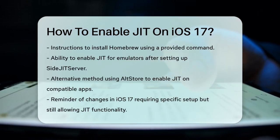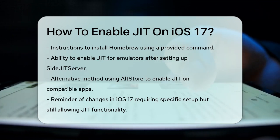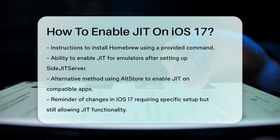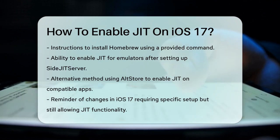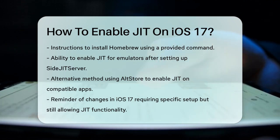If you're using AltStore, the process is slightly different. You need to ensure your device and AltServer are on the same Wi-Fi network. Open the My Apps tab in AltStore, long press the app you want to use JIT with, and press Enable JIT. You'll see a notification confirming that JIT has been enabled.